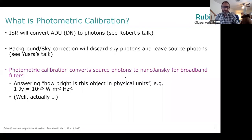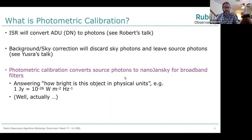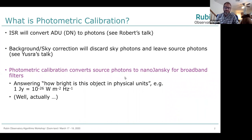So what is photometric calibration? ISR will convert ADU or DN — depending on which you prefer — to photons. That's from Robert's talk yesterday. The background sky correction will discard the sky photons and leave the source photons, from Usher's talk. And then the photometric calibration converts source photons to nanoJansky for broadband filters, answering how bright is this object in physical units, with Jansky being 10 to the minus 26 watts per square meter per hertz.